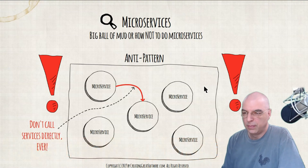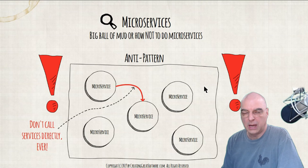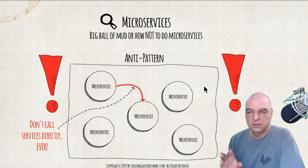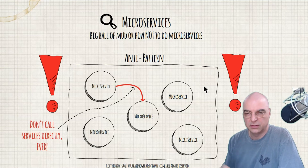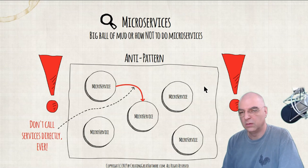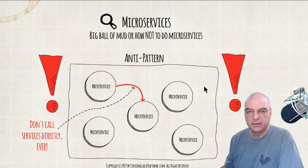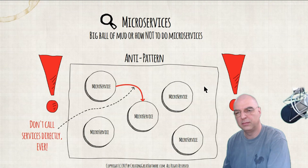I have seen absolutely horrible big balls of mud that were called microservices by organizations, which really wasn't at all. It was a big mess of service-oriented architecture — so many calls made to other microservices. This is a big anti-pattern. Don't do that. Don't call other microservices in your application directly.